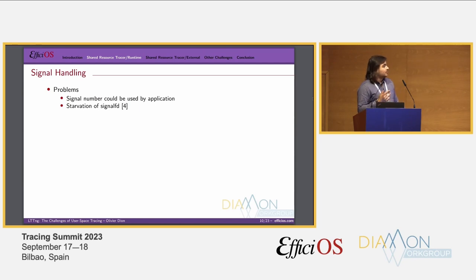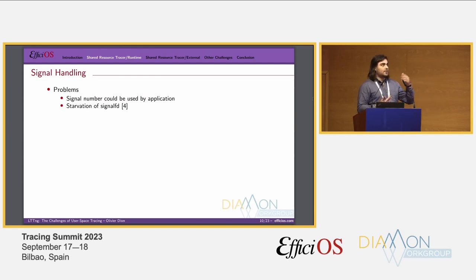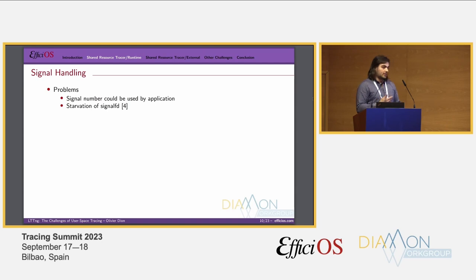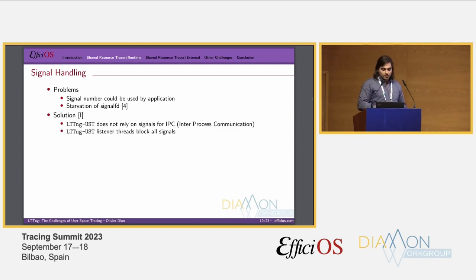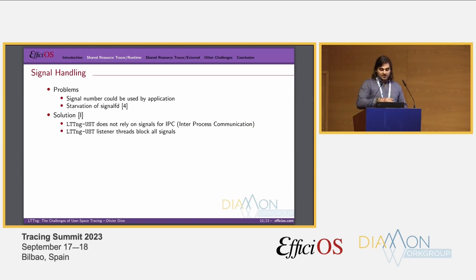There are also problems with signal handling. Signal numbers could be used by the application, so if your tracer expects to use a particular signal number for IPC, it may already be taken. There's also a problem with starvation of signal file descriptors — if the application is expecting a signal FD, the tracer could starve it. Our solution is to not rely on signals for IPC and to block all signals in tracer threads, which solves both the signal number conflict and the starvation problem.